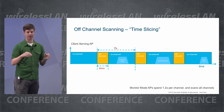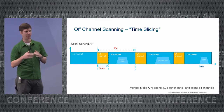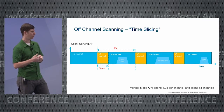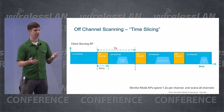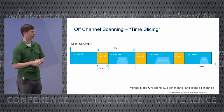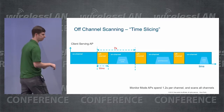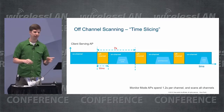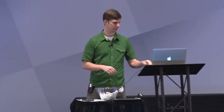When it's on channel and there's no traffic, it may go into a kind of promiscuous mode where it's passively looking at what's going on on the channel. I should point out that this is for a client-serving AP. If you have some sort of monitor mode AP, that access point is going to have a much longer dwell — about a second or 1.2 seconds on each channel.